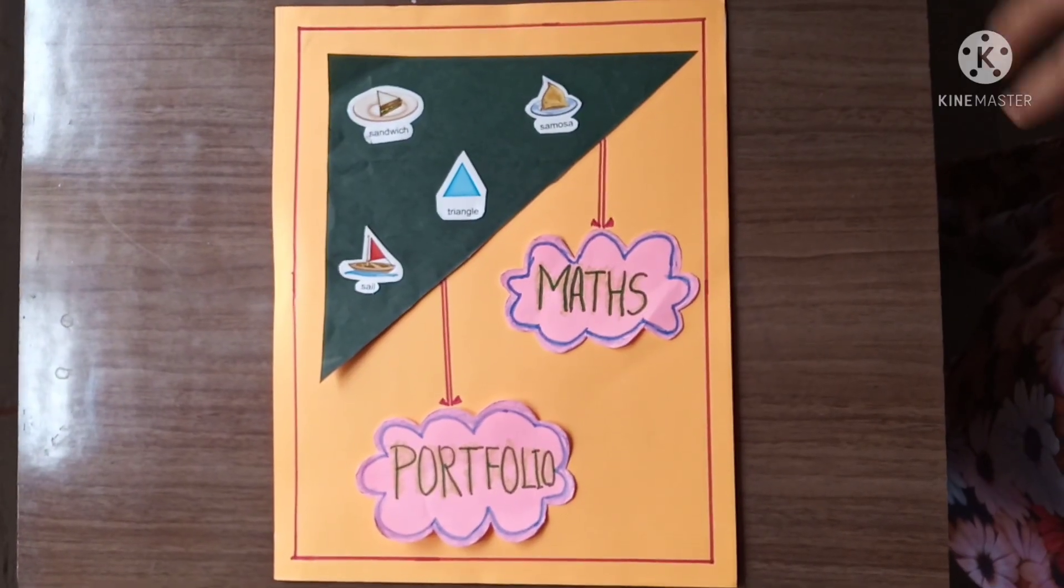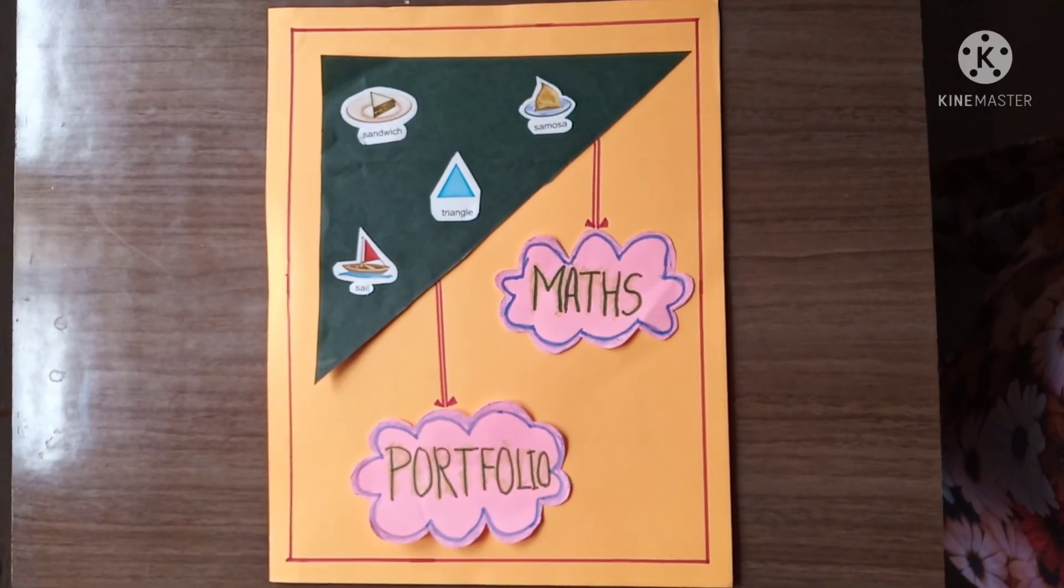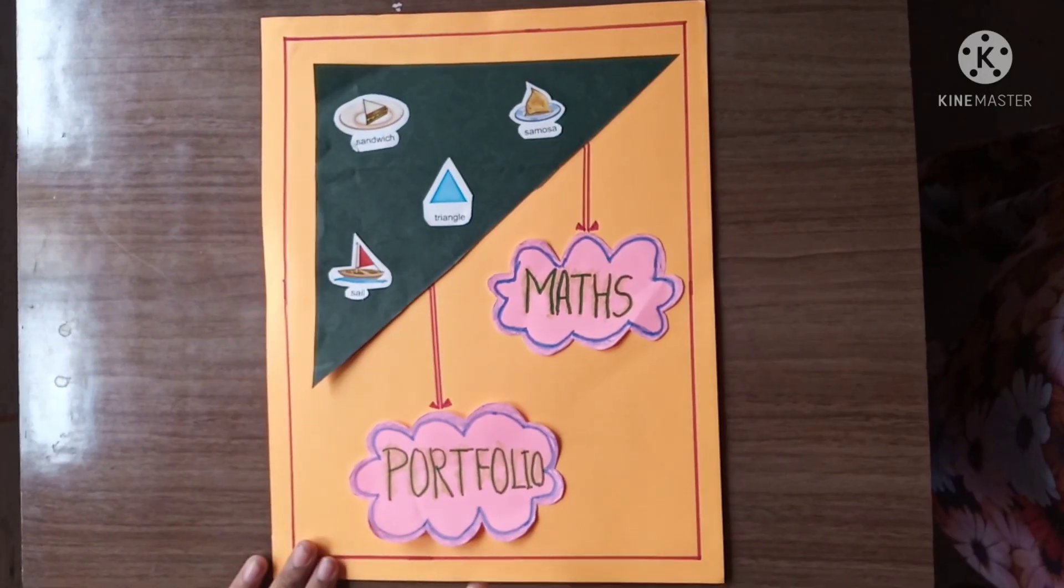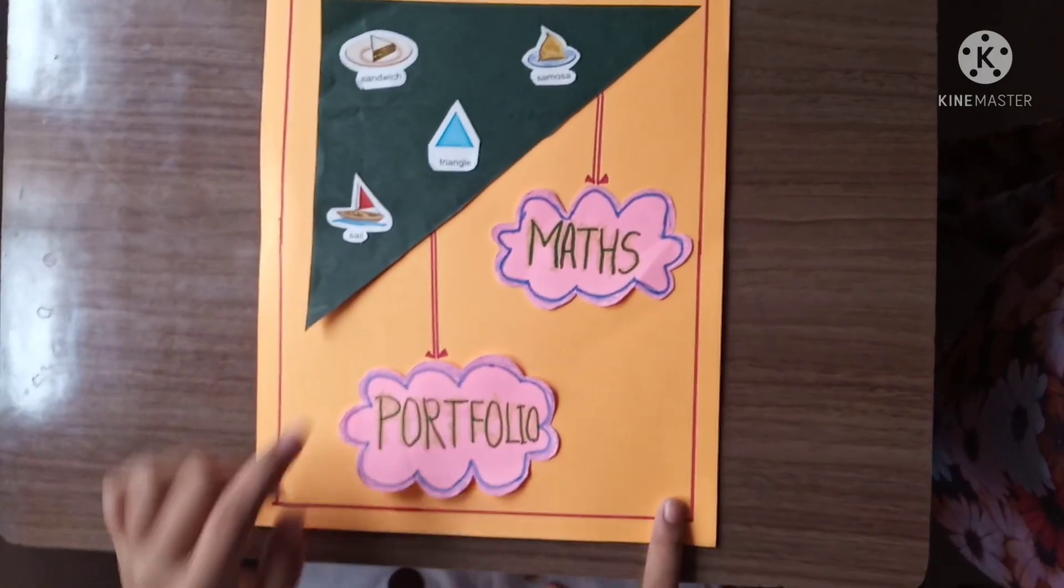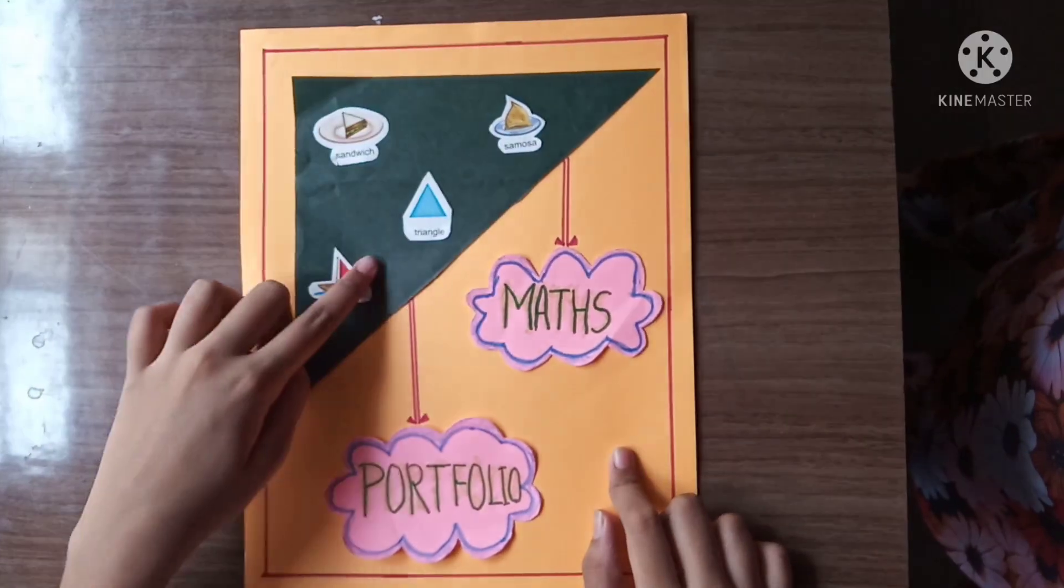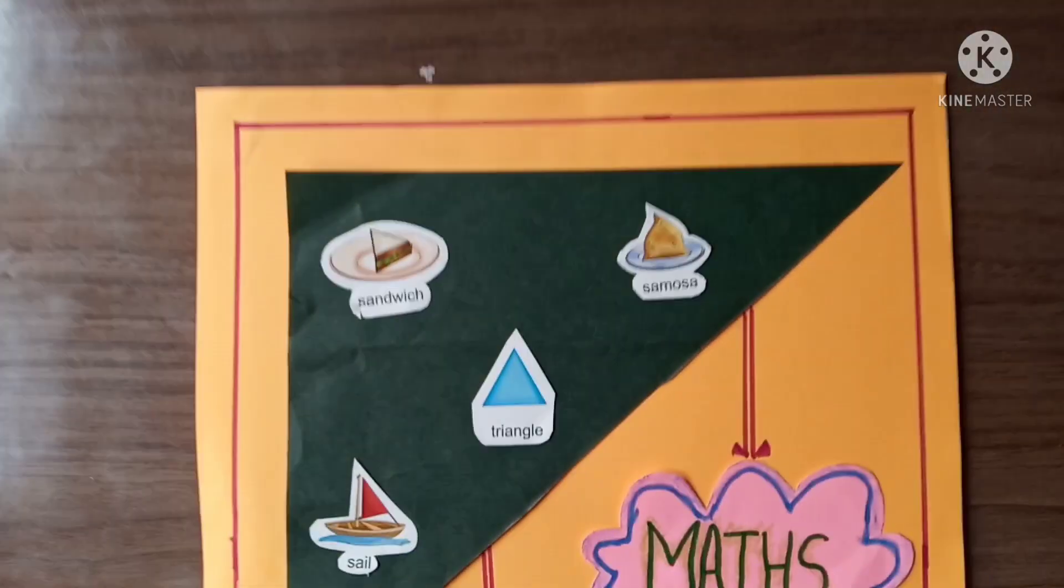Good morning friends, I am Anamise Nsikhet from class 7a and today I am going to show you my maths portfolio. So here is my maths portfolio. Here I took three colors: one pink, one orange and one olive green. Here I have stitched some triangular shapes on the olive green triangle and here I have written maths portfolio.